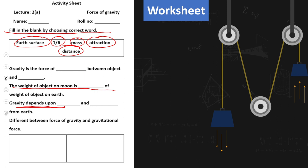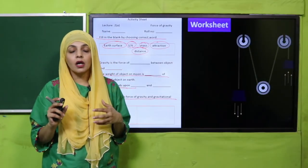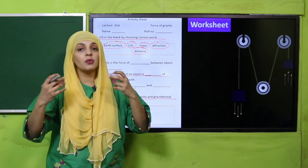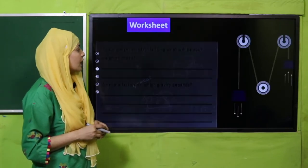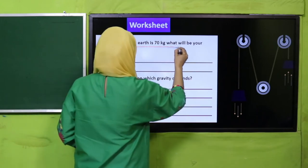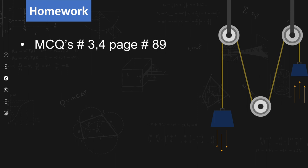Differentiate between force of gravity and gravitational force: Force of gravity is the attraction between the object and the earth; gravitational force is the attraction between two objects. Next part of the worksheet: if your weight on earth is 70 kg, what will be your weight on the moon? It will be one-sixth of the weight on earth. Gravity depends on two factors: mass and distance.